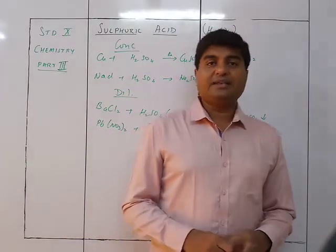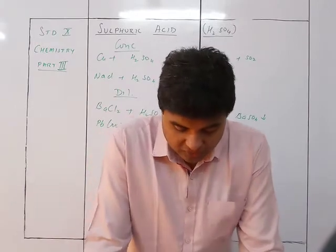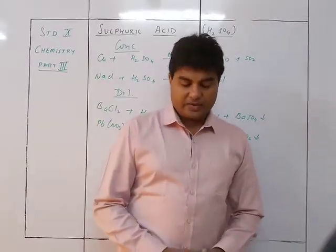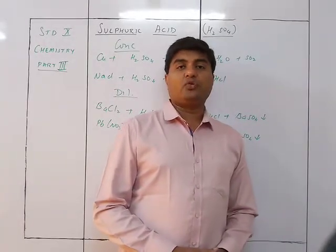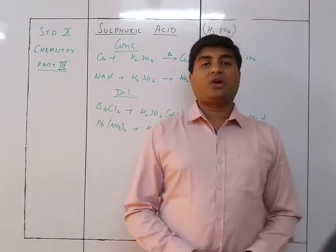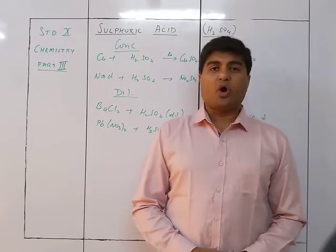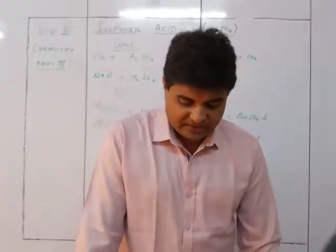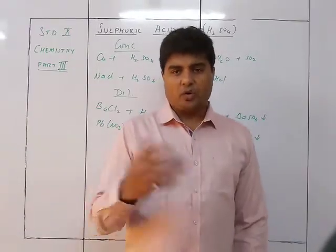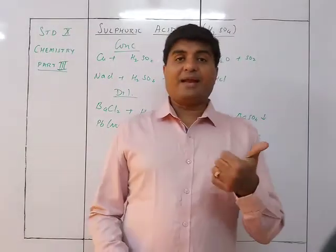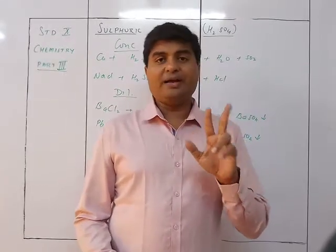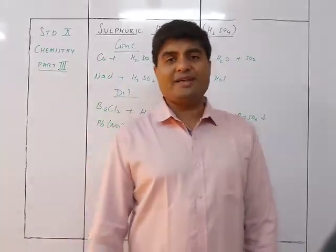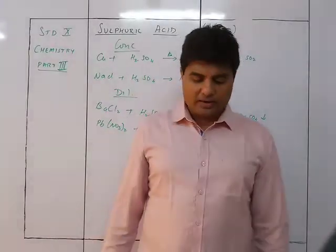MnO₂ is reduced, and HCl helps in that reduction. With carbon, sulfur, copper, and nitrates, nitric acid is a very good oxidizing agent giving NO₂. Sulfuric acid is also an oxidizing agent — it reacts with non-metals to give SO₂. Ammonia is a reducing agent, with a tendency to reduce copper oxide to copper.